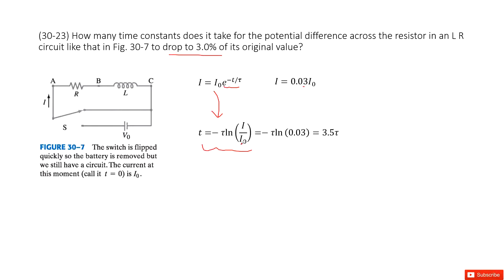In the original equations, you can see the ratio I over I naught is given as 0.03. So after calculation, we find this is 3.5 tau.